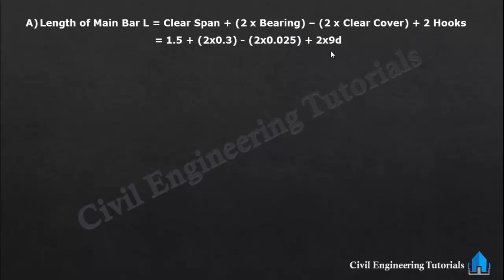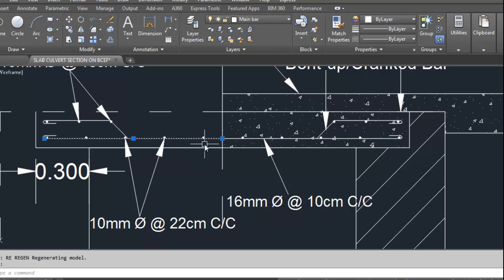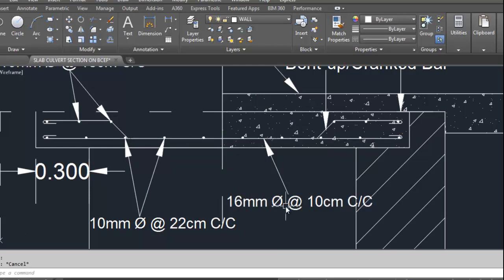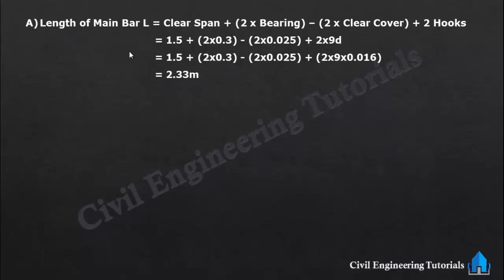For the hook we take 9D, so 2 into 9D. D is the diameter of the bar; the main bar diameter is 16 mm. So: 1.5 plus 2 into 0.3, minus 2 into 0.025, plus 2 into 9 into 0.016. This gives 2.33 meter. So the length of the main bar is 2.33 meter.